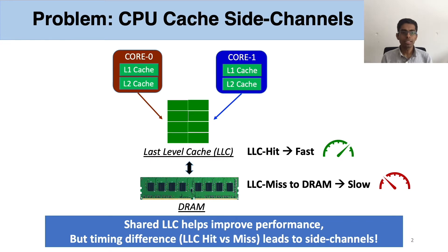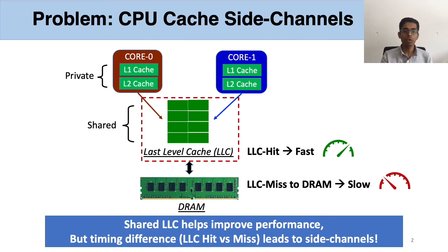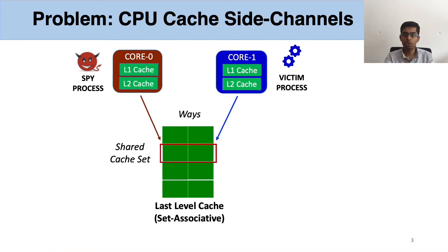Processor caches help improve performance by allowing fast access to cached data and avoiding slow accesses to DRAM. However, the timing difference between a cache hit and a miss can lead to timing side-channels, a security problem. In this talk, we focus on shared last level caches because they are shared across multiple cores and security domains. To enable efficient lookup, caches are split into small groups of addresses called sets.